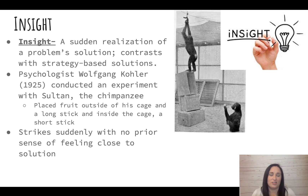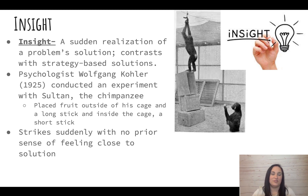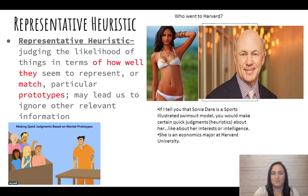Wolfgang Kohler did several experiments using chimpanzees on insight. In one, he had a chimpanzee named Sultan in a cage with a short stick. Outside the cage was a long stick, and fruit further away. At first Sultan tried to use the short stick to reach the fruit - he couldn't and was frustrated. Then he just sat there, and suddenly he got it: he used the short stick to pull in the long stick, then used the long stick to get the fruit. That was insight.